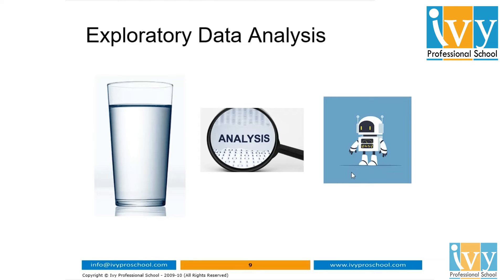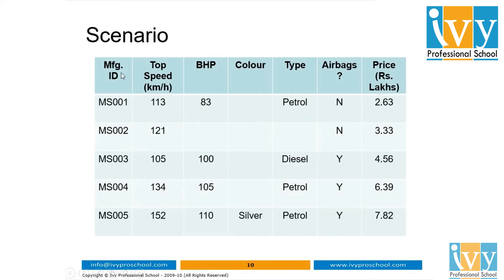Let us consider a scenario. We have a table of car details which has columns: manufacturing ID, top speed, BHP, color, type, whether it has airbags or not, and its price in rupees lakhs. In this table we have to predict the price of any new car fed to a machine learning model, so price is a continuous target variable. Let us classify all these columns.